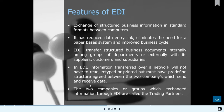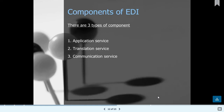The predefined structure is agreed upon between the company sending the data and the company receiving the data. The two companies or groups that exchange information through EDI are called trading partners. Trading partners exchange documents and information between each other — this may be a group or a company.